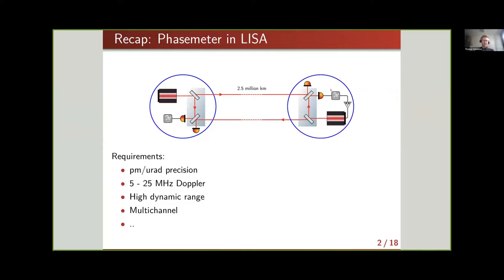A short recap of what the phase meter is supposed to do and what requirements are imposed on it. We have classic LISA long-arm interferometry simplified: our local spacecraft transmits a laser beam towards a remote spacecraft, with phase locking sending a phase copy back. We have a very long arm and a very short arm interferometer, and the beatnote from the interferometer is captured by our phase meter. Because we want to detect gravitational waves that are very tiny, we need picometer precision, which translates to microradian precision for the phase readout.